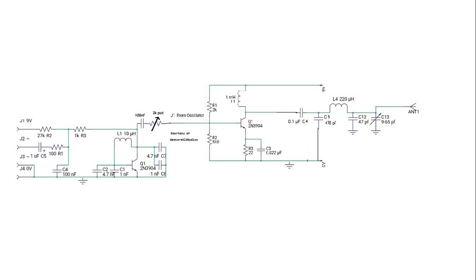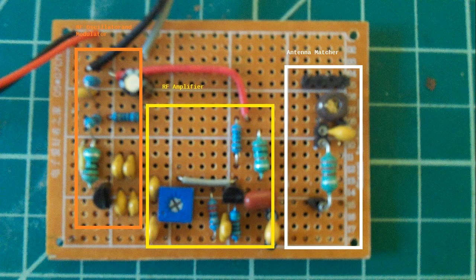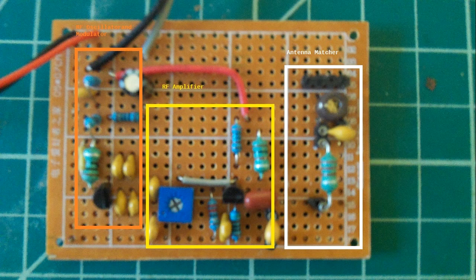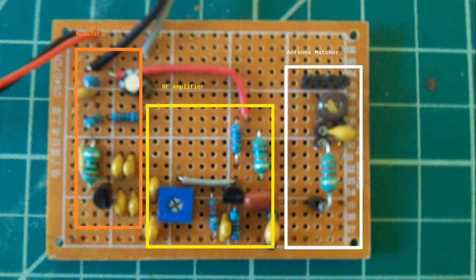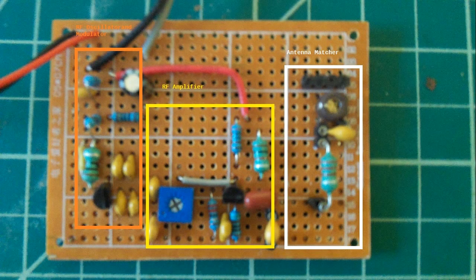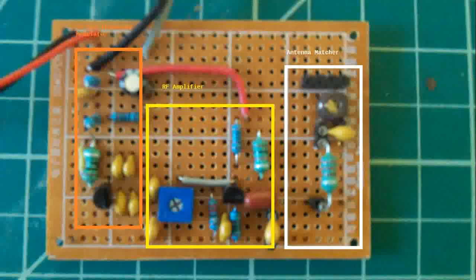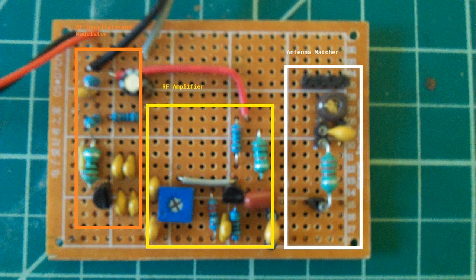And on a perfboard it looks like this. Again on the left, that's just the components of our transmitter that we had before. In the middle we have the RF amplifier, and to the right is the antenna tuner circuit.